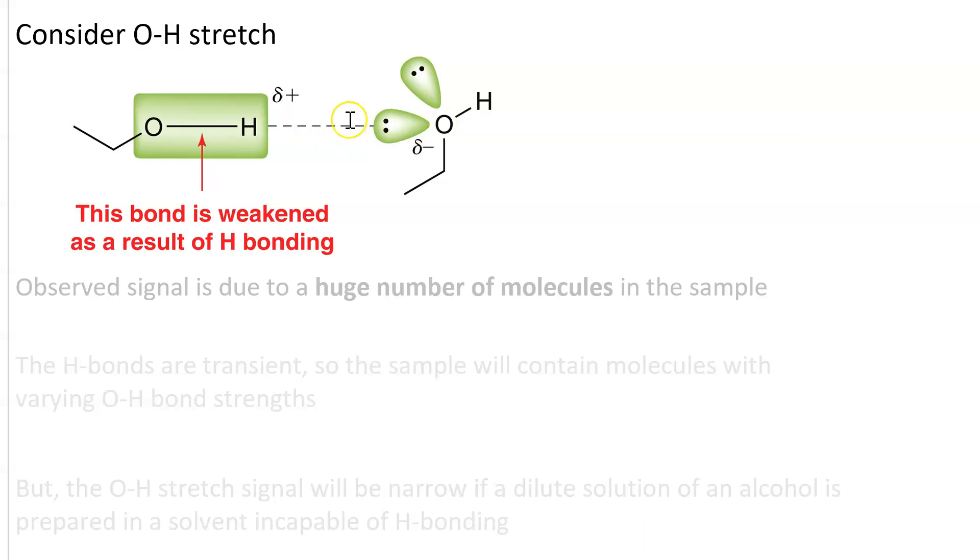And the closer these two molecules are together, the greater the strength of the hydrogen bonding interaction. And a greater hydrogen bonding interaction reduces the strength of the OH bond. It reduces F.